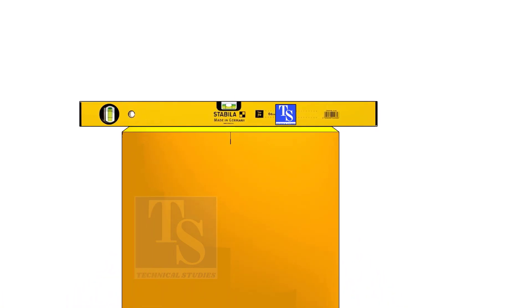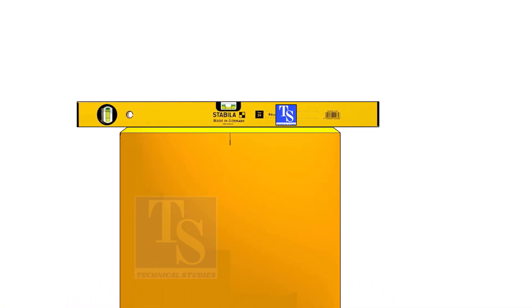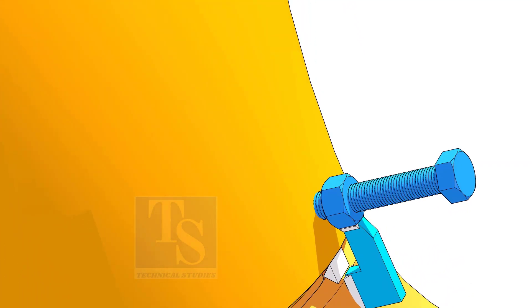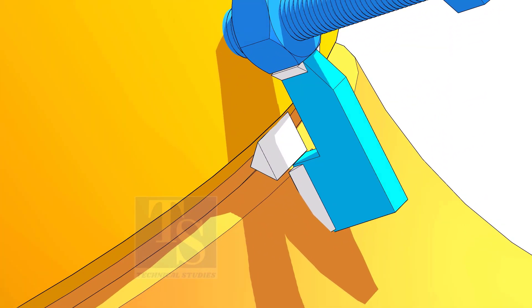Make the elbow level horizontally. Tack weld on both sides as shown.